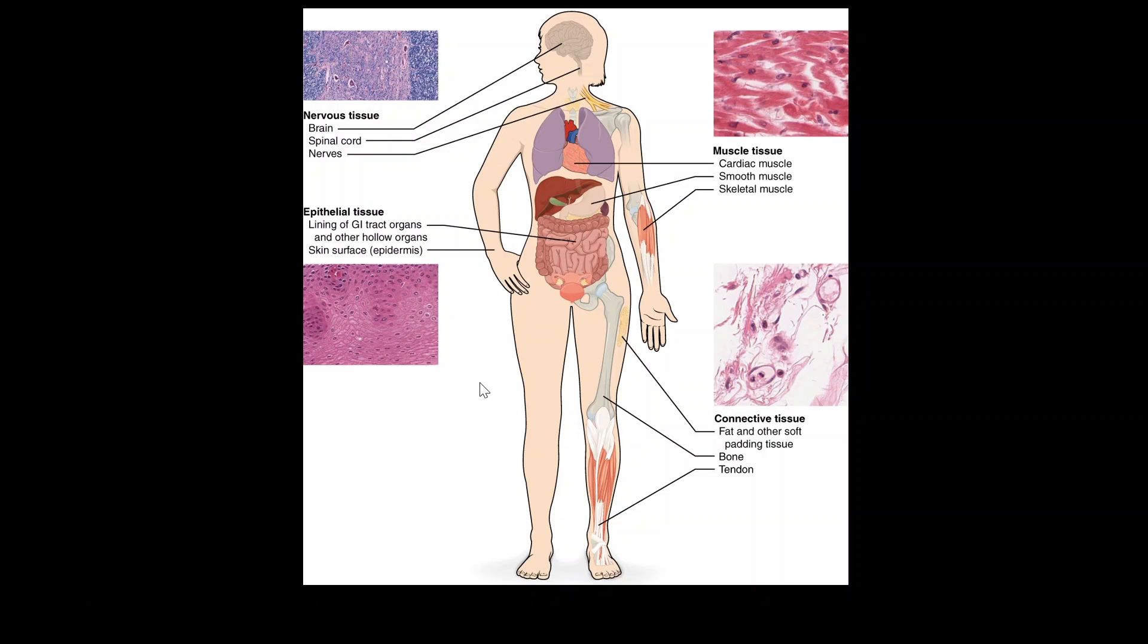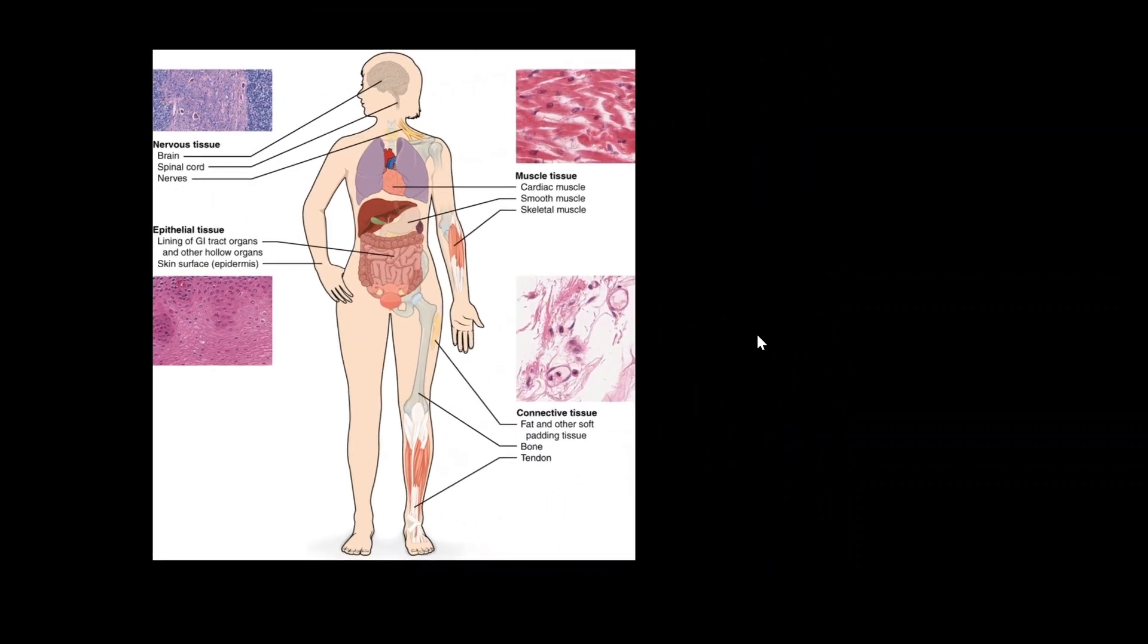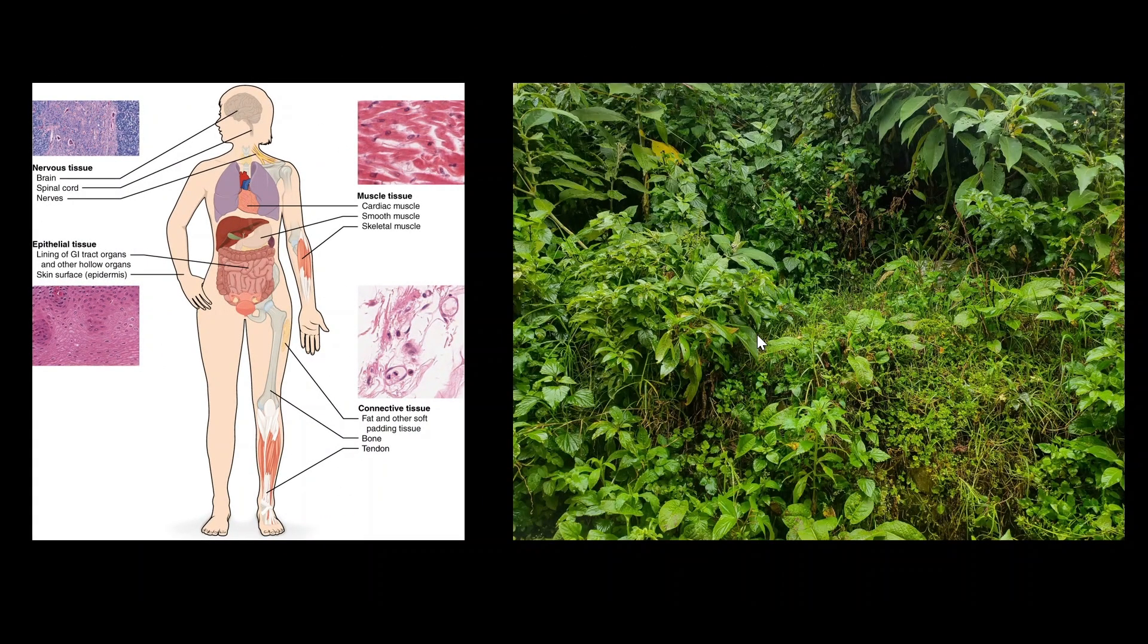The human body has various tissues, and among them, the connective tissue helps to hold everything together. Our muscles, bones, and organs - they help to support, store, and connect. But have you ever wondered, do plants also have something similar?